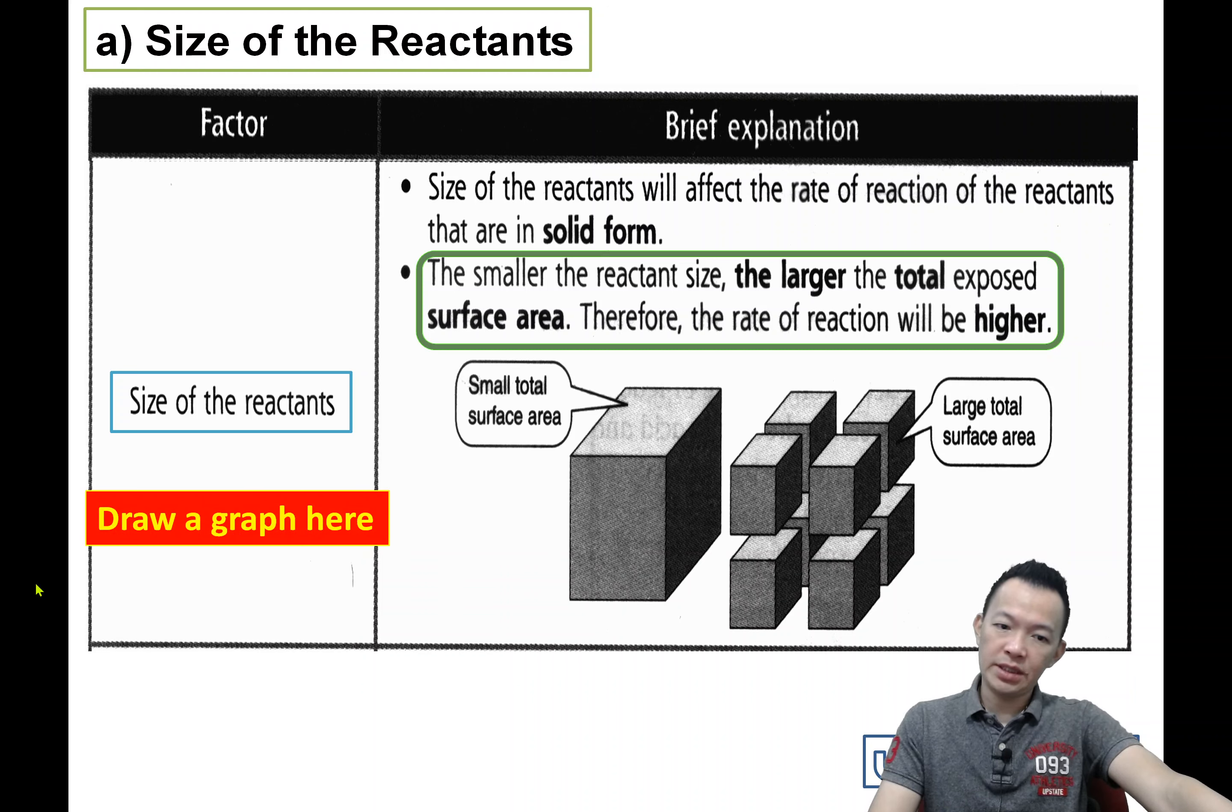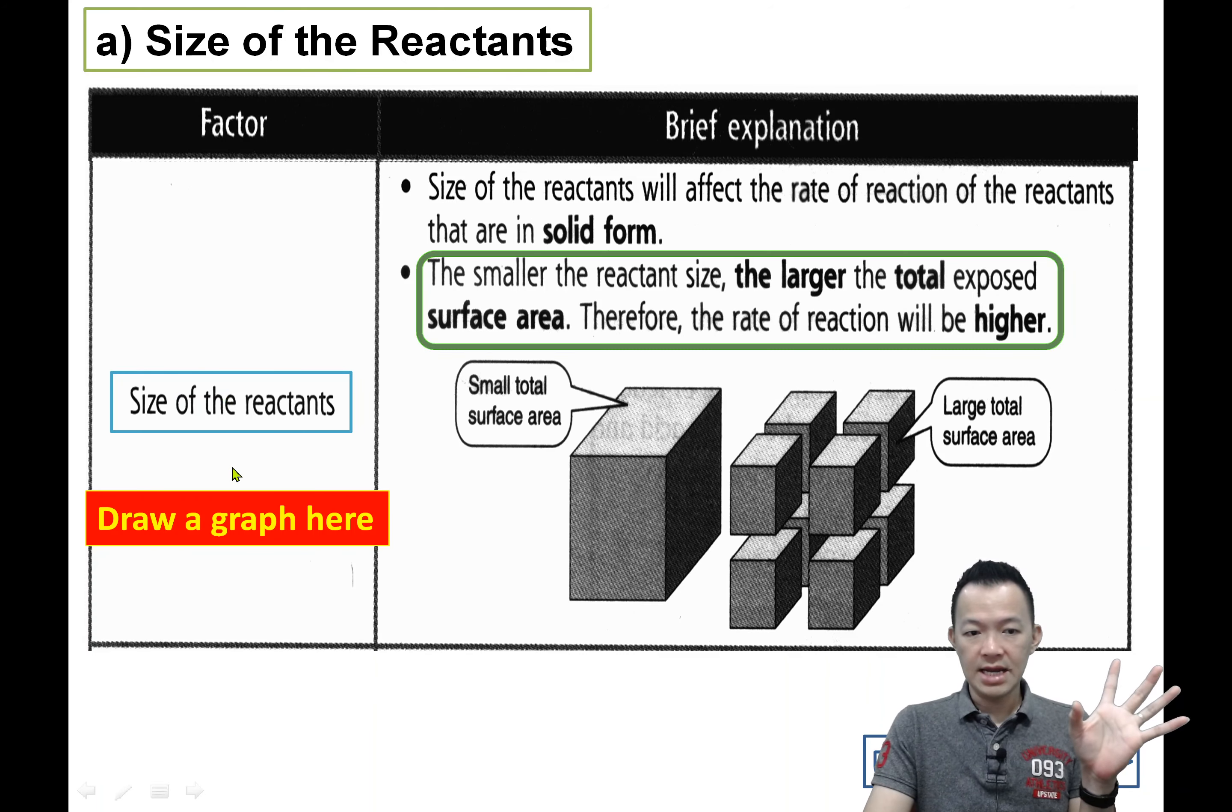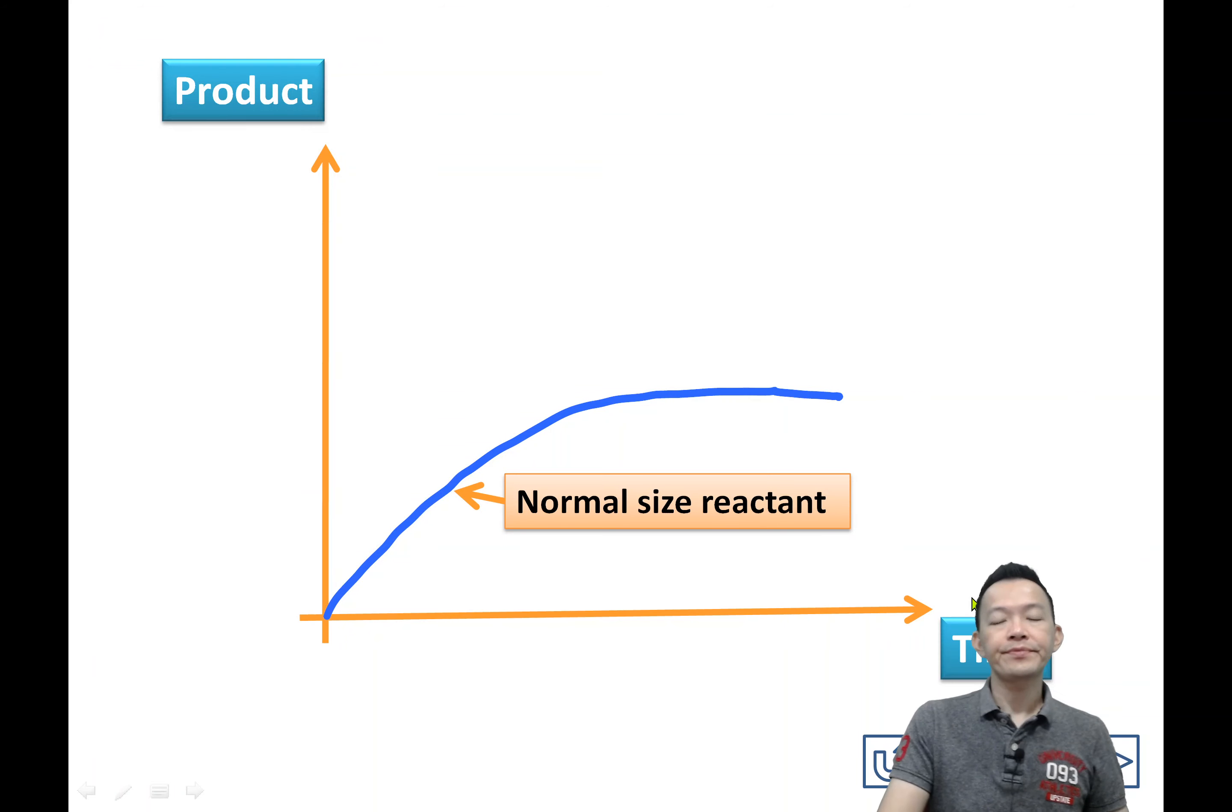Now, if you understand, we draw a graph here. In your note, there's a small demonstration here, right? You can start now. What's the meaning of the graph? At the beginning, this is our first experiment. As the time progressed, the product obtained become more and more, until the end, it become constant. At the beginning of the experiment, first set of experiment, that we using the normal size reactant.